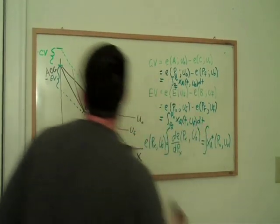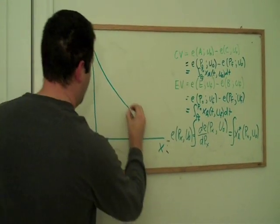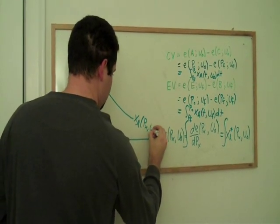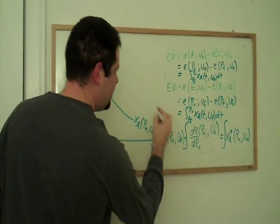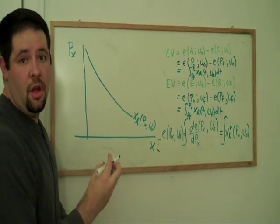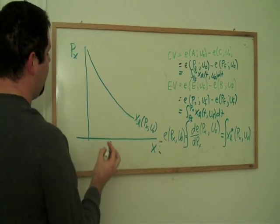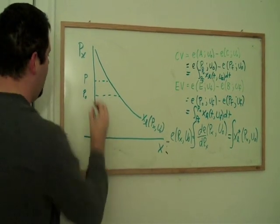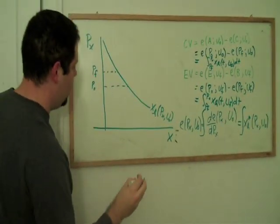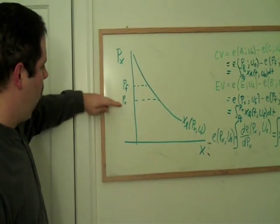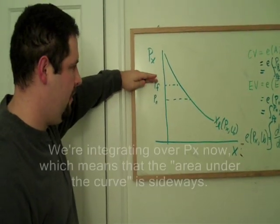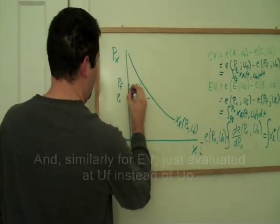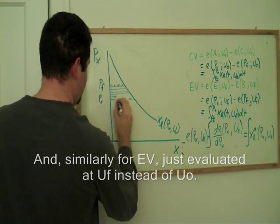How does this look on a graph? We can think about our Hicksian demand curve as a function of price and utility. Let's just do compensating variation for the sake of the simplicity of this graph. Our original price and our final price. And we can ask ourselves, when we integrate from the final price to the original price, what that area looks like.